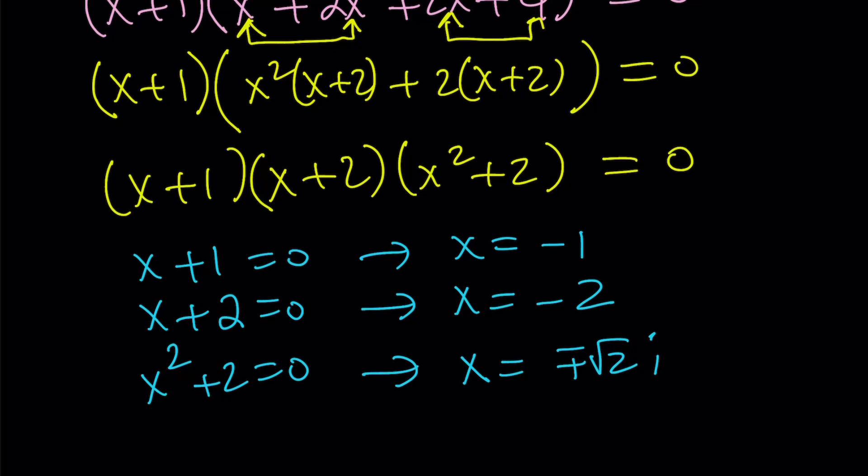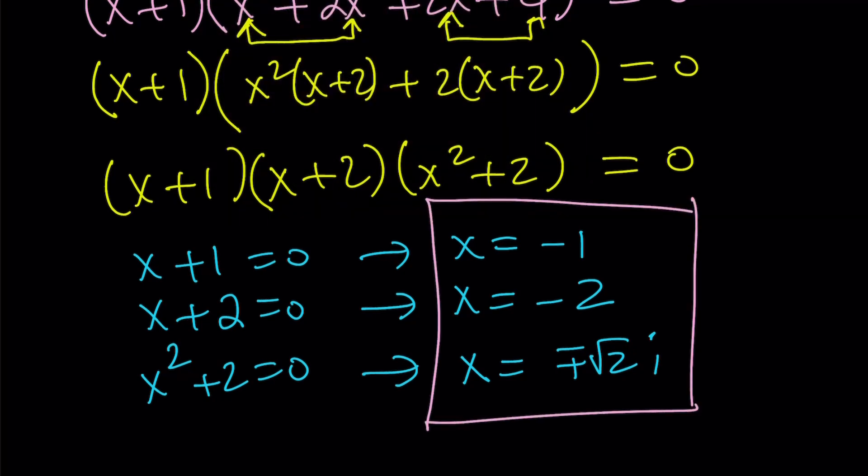So, we end up with three solutions here. Well, I should say four, I guess, right? The plus minus gives us two. And it's a quartic, so it makes sense. It has four solutions. Awesome.